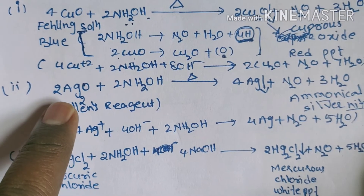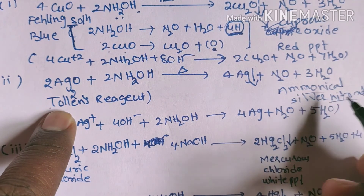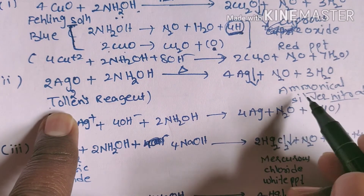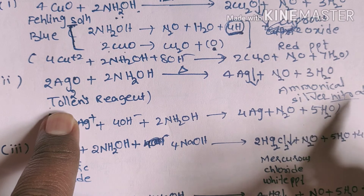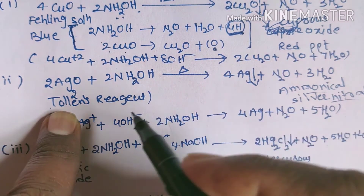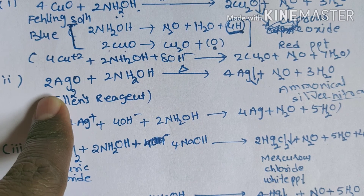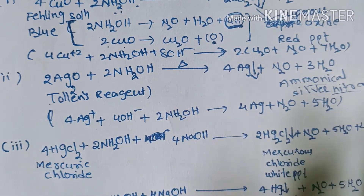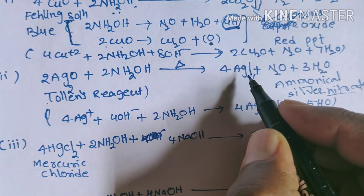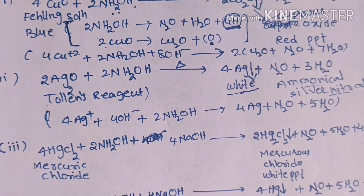Hydroxylamine also reduces Tollens' reagent. Tollens' reagent is a mixture of silver nitrate and aqueous ammonia solution — that is, ammoniacal silver nitrate — represented as Ag₂O for convenience. On heating with hydroxylamine, Ag₂O is reduced to silver metal. Silver metal is white and precipitates on the walls of the test tube, which is known as the silver mirror test.